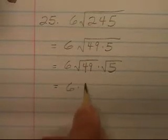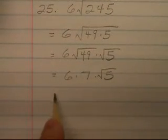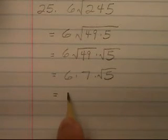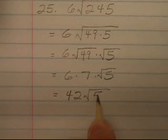That'll be six times seven times the square root of five. So in simplest form, that radical expression can be expressed as forty-two times the square root of five.